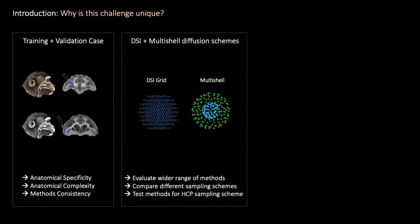It has data from both a training and validation case which allows us to evaluate how two different anatomical profiles can affect the accuracy of tractography. We made available data with different diffusion schemes which allows us to evaluate a wider range of methods, compare differences across sampling schemes and evaluate optimal methods for specific acquisition schemes like the HCP lifespan acquisition scheme.